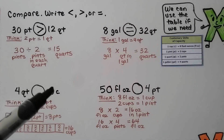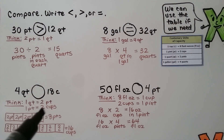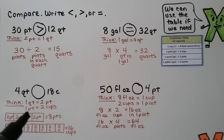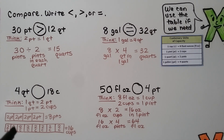Here we compare four quarts and eighteen cups. One quart is two pints, and one pint is two cups. We can draw a picture: four boxes for four quarts, each with two pints inside, gives eight pints. Then eight boxes for eight pints, each with two cups, gives sixteen cups. So sixteen cups is less than eighteen cups.